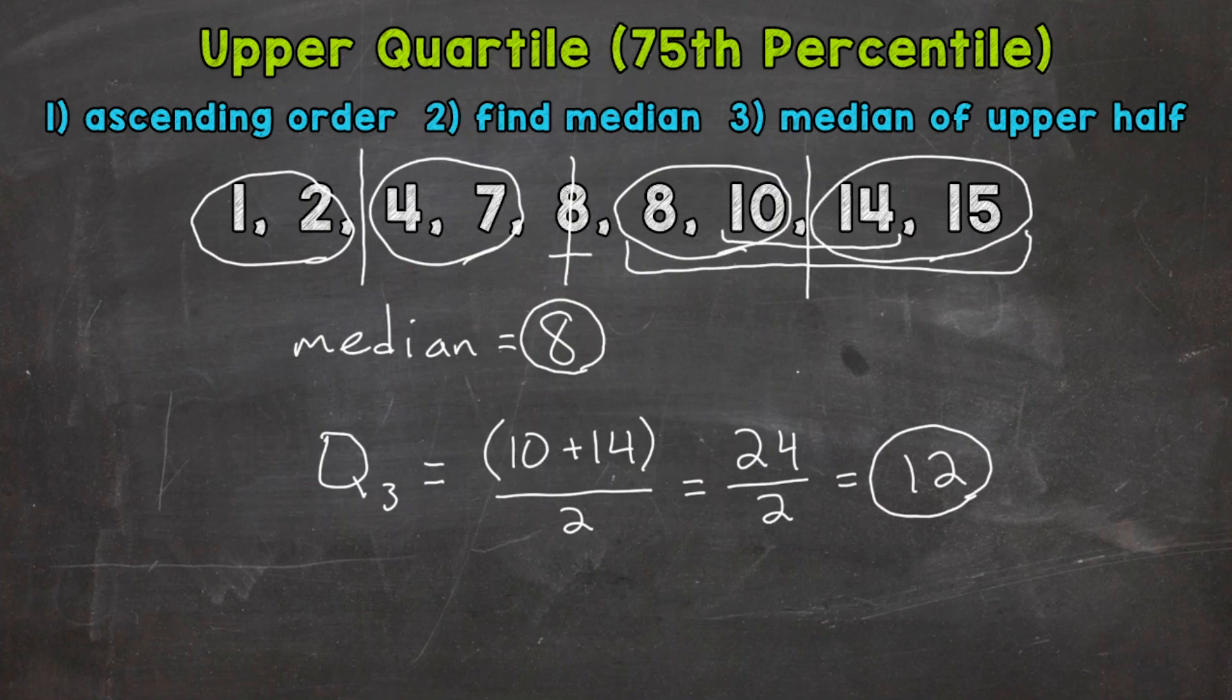So our focus was the upper quartile, which was right there. So to the left of that, we have 75% of our data. To the right of our upper quartile, we have 25% of our data.